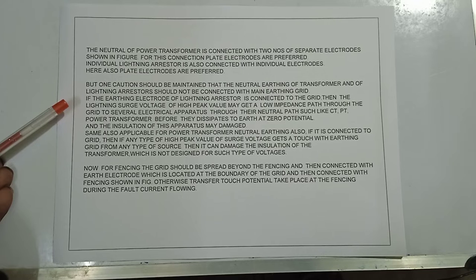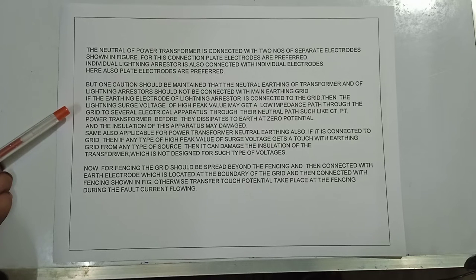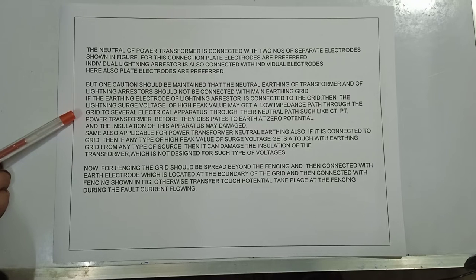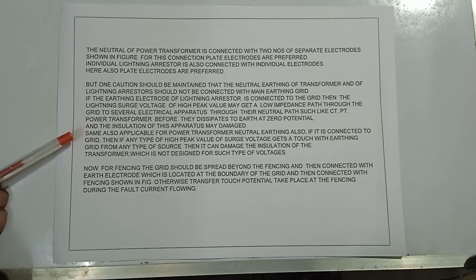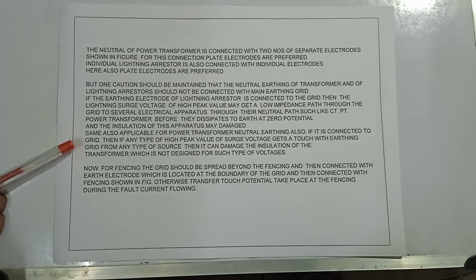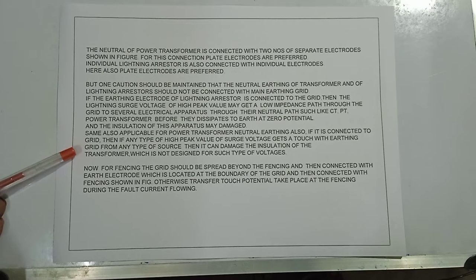If the earthing electrode of the lightning arrestor is connected to the grid, then the lightning charge voltage of high peak value may get a low impedance path through the grid to the neutral path of equipment such as CTs, PTs, and power transformers before dissipating to earth, and the insulation of these apparatus may be damaged. Similarly, if the power transformer neutral is connected to the grid and any high peak voltage reaches the grid from any source, it can damage the transformer insulation, which is not designed for such voltages.